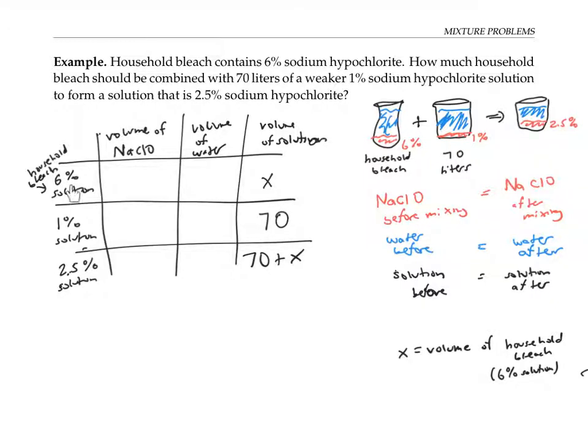Now, the 6% solution means that whatever the volume of solution is, 6% of that is the sodium hypochlorite. So the volume of the sodium hypochlorite is going to be 0.06 times x. The volume of water in that solution is whatever's left, so that's going to be x minus 0.06x or 0.94 times x.